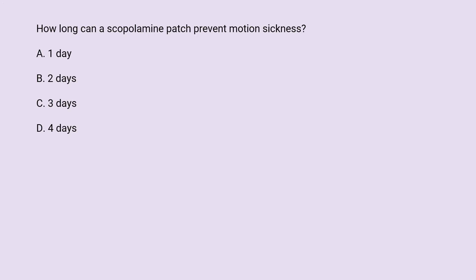How long can a scopolamine patch prevent motion sickness? A. 1 day. B. 2 days. C. 3 days. D. 4 days.